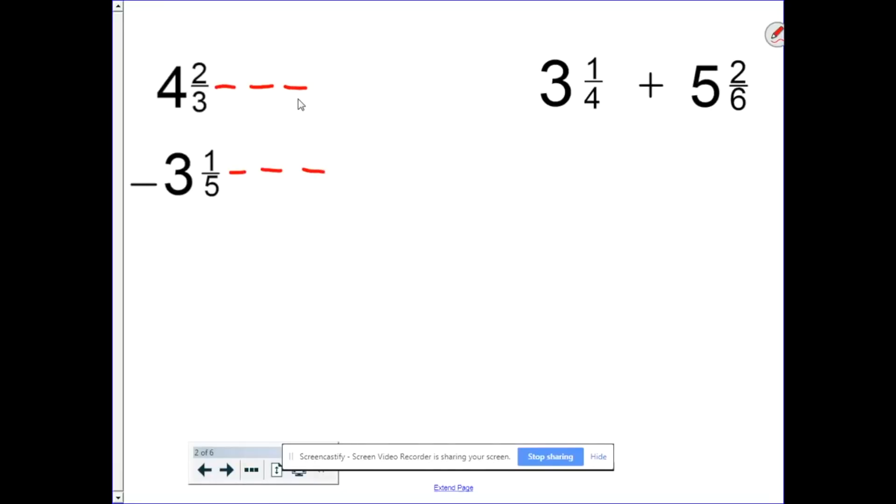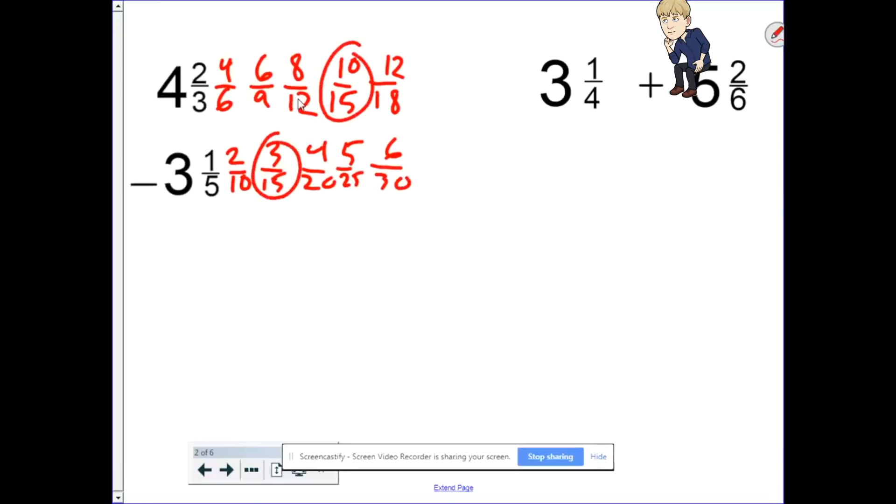So write out 1, 2, 3. Remember, we're not writing out a ton of them because we don't want to waste effort. So 2, 4, 6, 8, 3, 6, 9, 12. 1, 2, 3, 4, 5, 10, 15, 20. Hmm, nothing yet. Let's do a couple more. 15, 18, 10, 12, 5, 6, 25, 30. Aha, here we go.